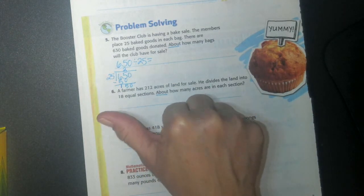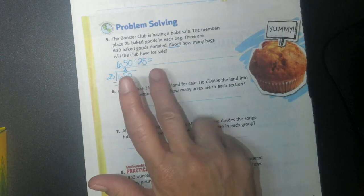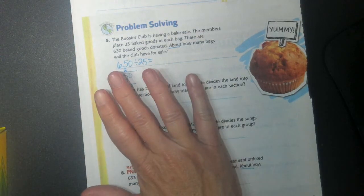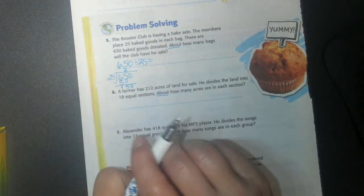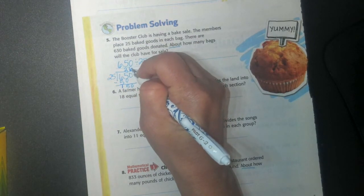25 goes into 150. So I could just count by 25. Right, 25, 50, 75, 100, 125, 150. So 6 times.